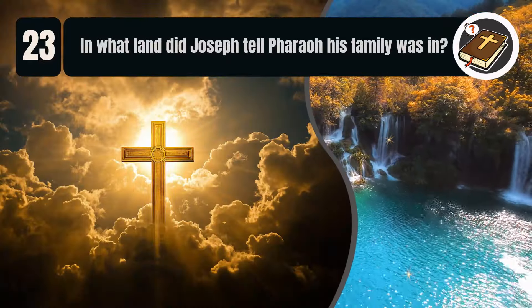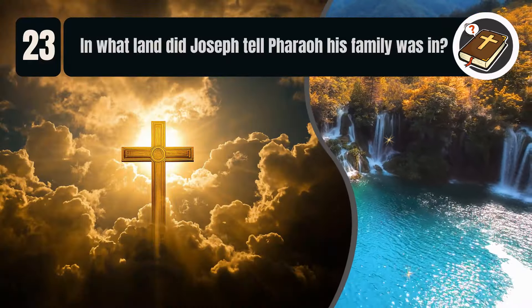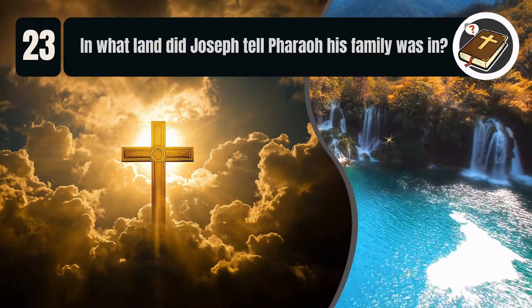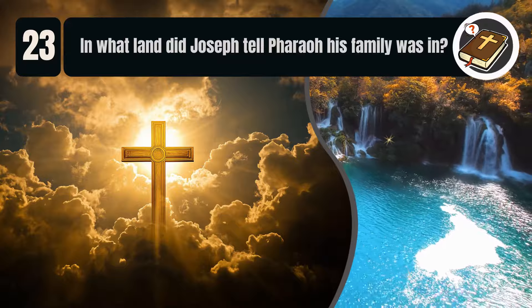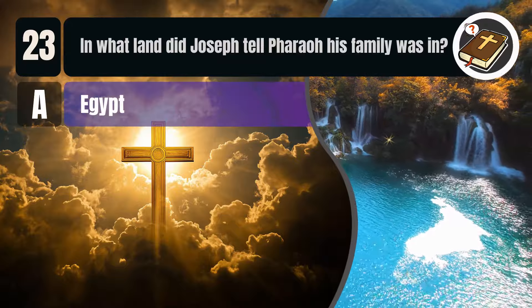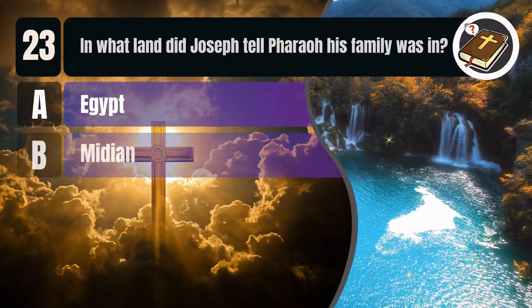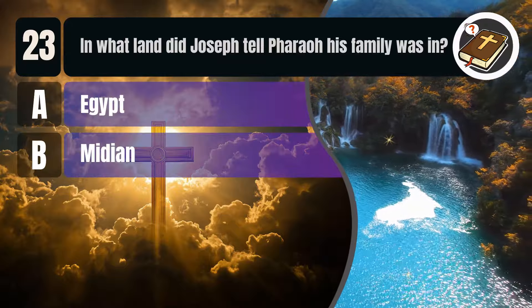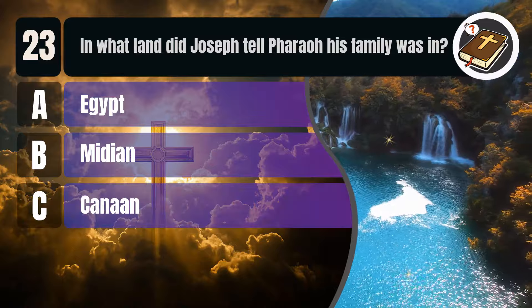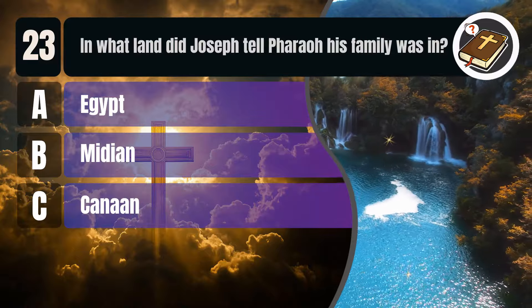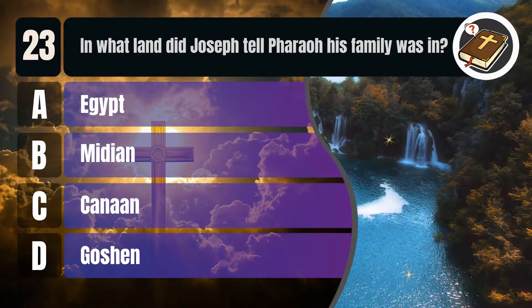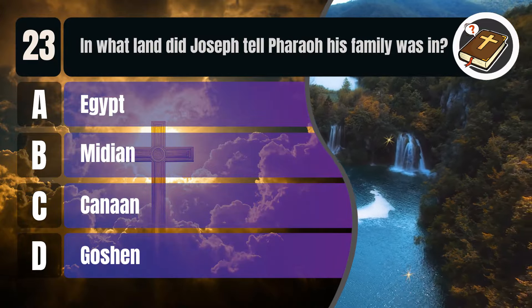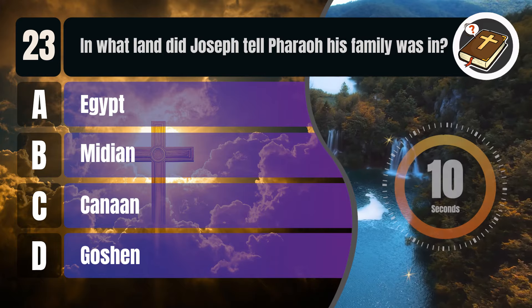Question 23. In what land did Joseph tell Pharaoh his family was in? A. Egypt. B. Midian. C. Canaan. D. Goshen.